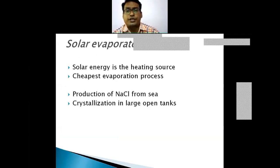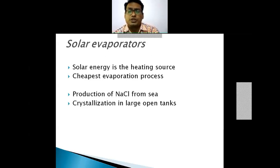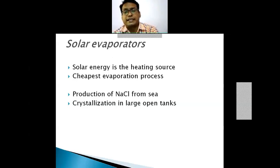The solar evaporator is the cheapest type, using solar energy for heating. It is generally used for production of sodium chloride (NaCl), which we observe near seashores. The process of crystallization is associated with this production of NaCl. It is an open-source system where sun energy is used and water is evaporated — this is the solar evaporation system.